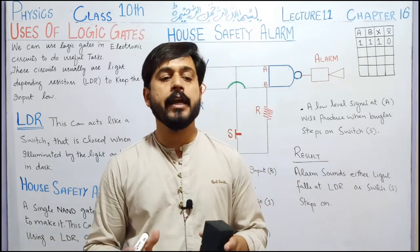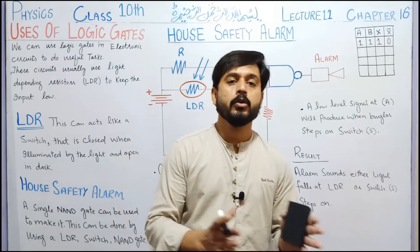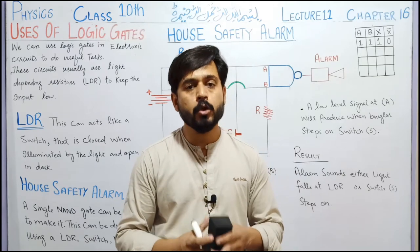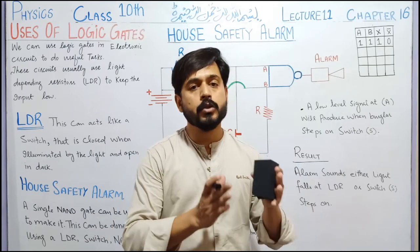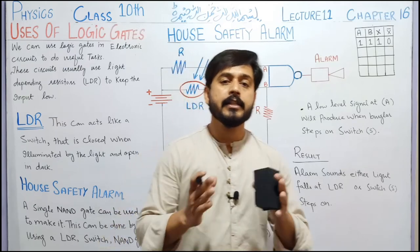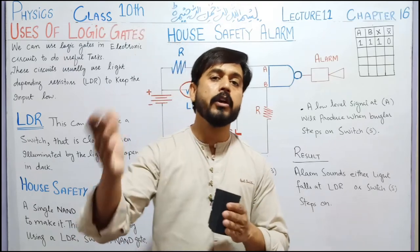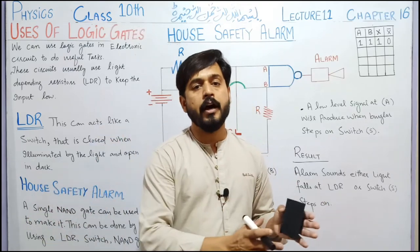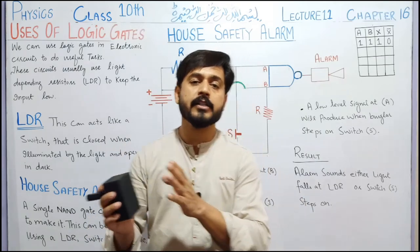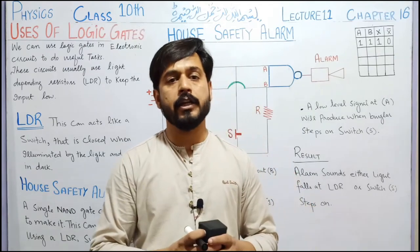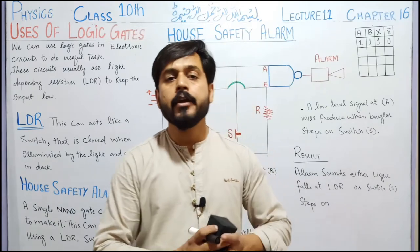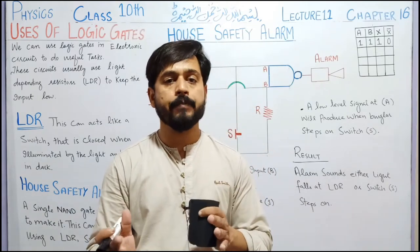Conductors are all those things that allow the flow of current, that let current pass through. But all conductors in the world have the property that they create some resistance against the passing current. This resistance is called 'resistance'. The greater the resistance of any conductor, the less current will flow through it, and the less the resistance, the more current flows. Good conductors like copper have very low resistance, but bad conductors or insulators have very high resistance.